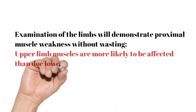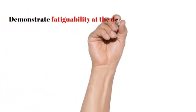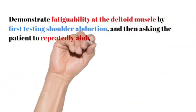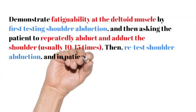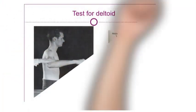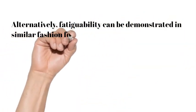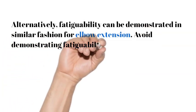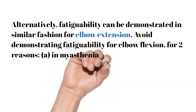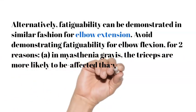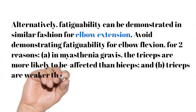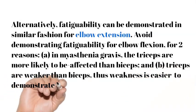Demonstrate fatigability at the deltoid muscle by first testing shoulder abduction, then asking the patient to repeatedly abduct and adduct the shoulder, usually 10 to 15 times. Then retest shoulder abduction, and in patients with fatigable weakness there will be a marked increase in deltoid weakness. Alternatively, fatigability can be demonstrated in similar fashion for elbow extension. Avoid demonstrating fatigability for elbow flexion for two reasons: in myasthenia gravis the triceps are more likely to be affected than biceps, and triceps are weaker than biceps, thus weakness is easier to demonstrate in the examination setting.